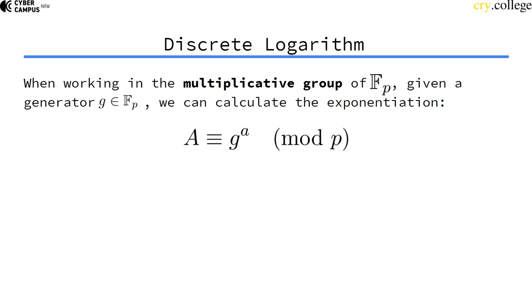we can calculate the exponentiation like generator to the power of a gives us capital A modulo p. And p is a prime number because we have learned that it's only a field if the modulus is a prime number, right?